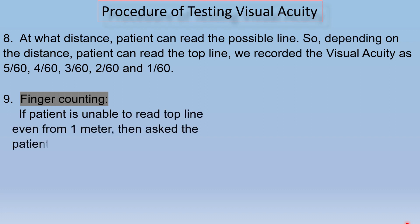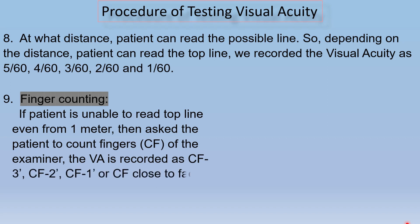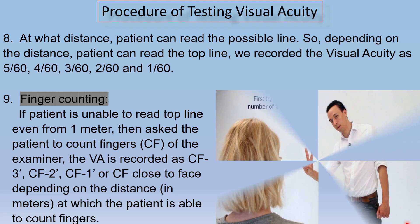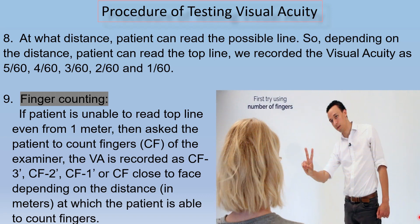Step number 9: If the patient is unable to read the top line even from 1 meter, then ask the patient to count the fingers of the examiner. The visual acuity is recorded as CF-3, CF-2, CF-1, or CF meaning close to face, depending on the distance at which the patient is able to count fingers.